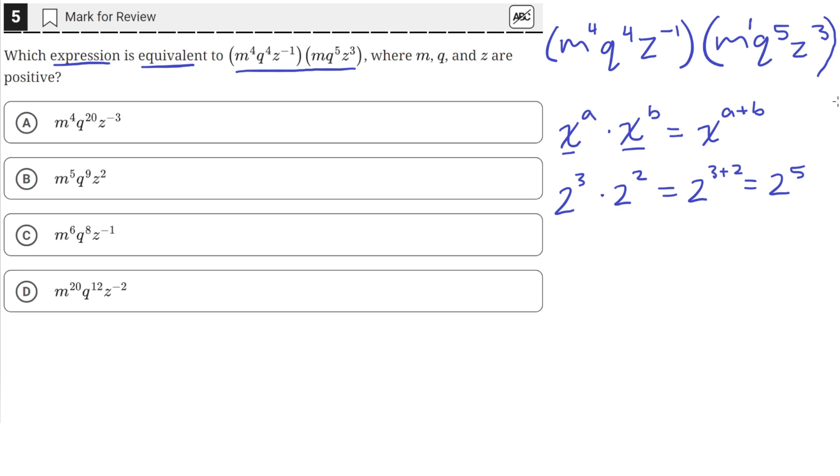Alright, so let's get rid of all this here so we can actually solve the problem. We have m to the fourth and then we have m raised to the first. Since they have the same base, we can just multiply them, so this will become m to the fifth.